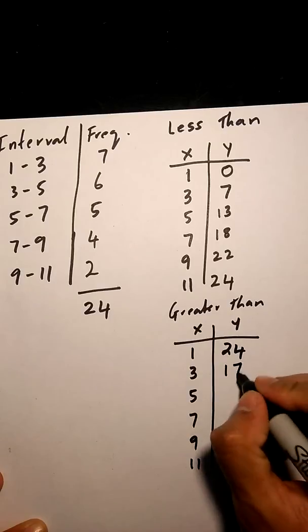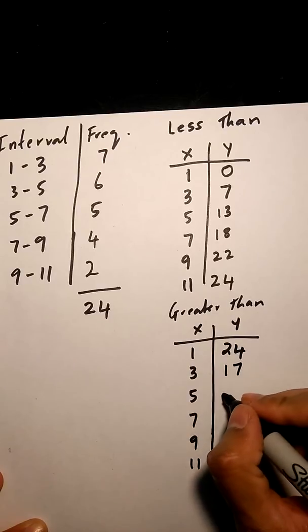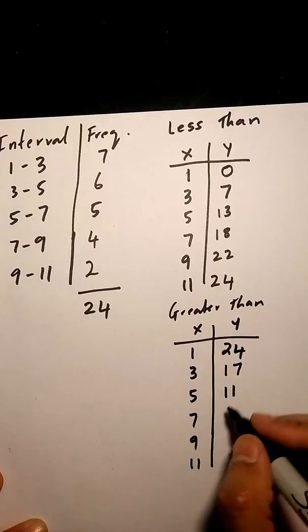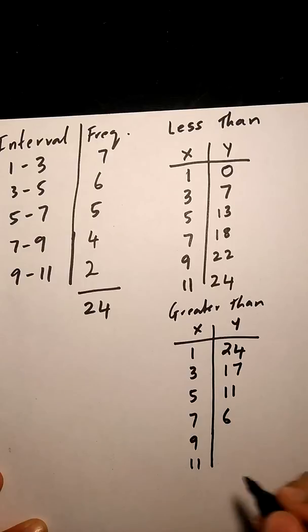So 24 minus 7, 17. 17 minus 6, 11. 11 minus 5, 6. 6 minus 4 is 2, and 2 minus 2 is 0.